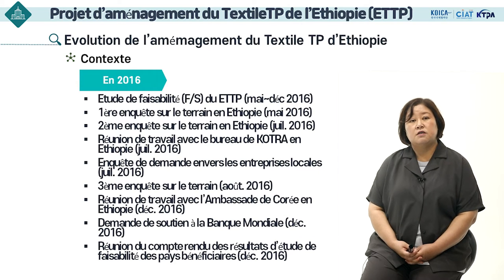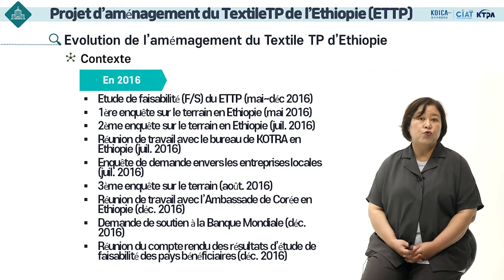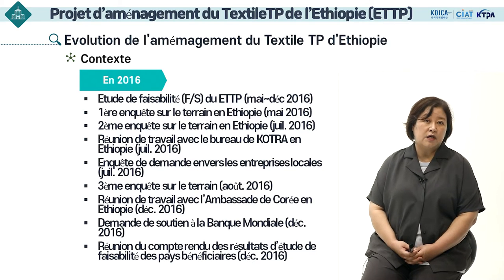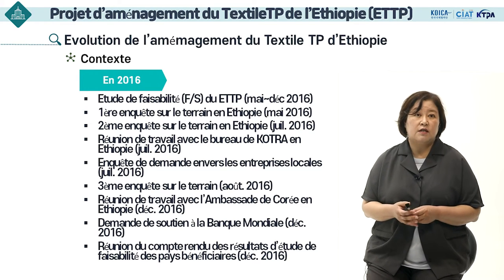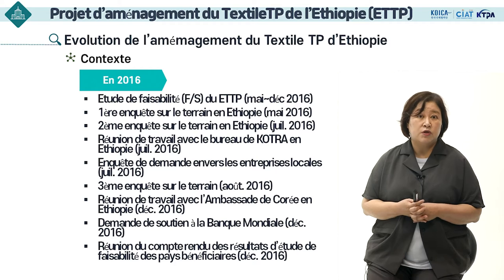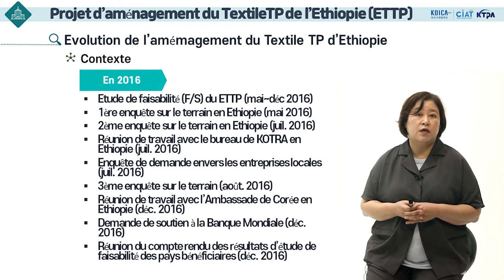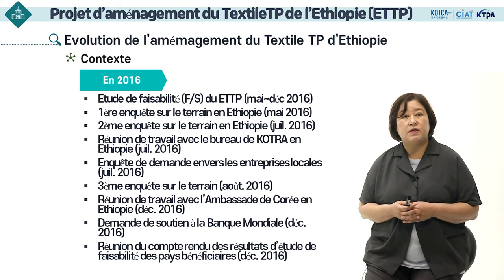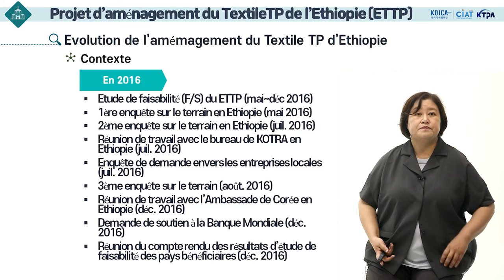Lors du sommet entre les deux pays en avril 2015, le gouvernement éthiopien a demandé au gouvernement coréen de soutenir l'aménagement d'un textile technoparc. À travers le développement de l'industrie textile coréenne, il y a une demande de transmettre le modèle de développement qui a constitué la base du développement industriel. En réponse à la demande, une étude de faisabilité pour le textile technoparc de l'Éthiopie a été menée de mai à décembre 2016.